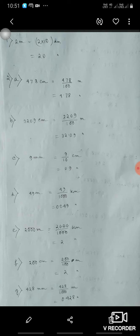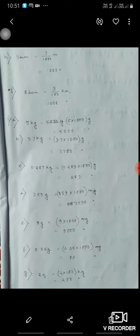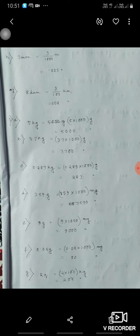49 meter means 49 upon 1000 kilometer means 0.049. Then 2000 meter means 2000 upon 1000 is 2 kilometer. 200 centimeter means 200 upon 100 meter means 2 meter. 428 millimeter means 428 upon 1000 is 0.428 meter.